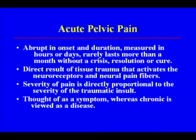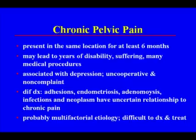Acute pelvic pain is abrupt in onset, measured in hours or days, and rarely lasts more than a month without resolution or cure. It's due to direct tissue trauma that activates neural pain receptors. The severity of the pain is directly proportional to the severity of the traumatic insult. It's thought to be a symptom, whereas chronic pain is viewed as a disease.